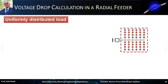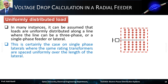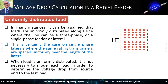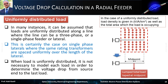Let's consider the case of a uniformly distributed load on a primary feeder. In many instances, it can be assumed that loads are uniformly distributed along a line, where the line can be a three-phase or single-phase feeder or lateral. This is certainly the case on single-phase laterals, where the same rating transformers are spaced uniformly over the length of the lateral. When load is uniformly distributed, it is not necessary to model each load individually to determine the voltage drop from source end to the last load. In this case, what is given are the load density in kVA per square kilometer and the total area in square kilometers. Recall that in the case of uniformly distributed load, the total load may be concentrated or lumped at midpoint.